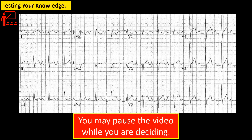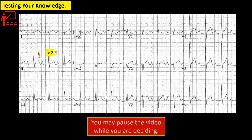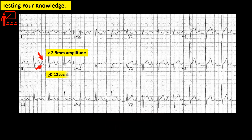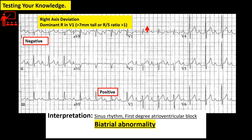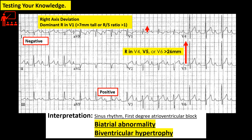How about this tracing? What is your reading? There is sign of right atrial enlargement and left atrial enlargement — so biatrial abnormality. Moreover, this tracing fulfills the criteria for right ventricular hypertrophy and voltage criteria for left ventricular hypertrophy, so this is also biventricular hypertrophy. And that is the end of our lecture.